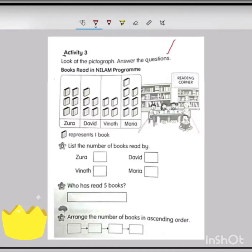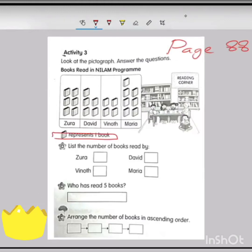We continue on page 88. You have learned about pictogram and tally. Now we continue the exercise here. Look at the pictogram and answer the questions. These are the books read in the program. There are four students here: Zora, David, Vinod, and Maria. This is the important information - one book represents one book. The picture of one book represents one book.